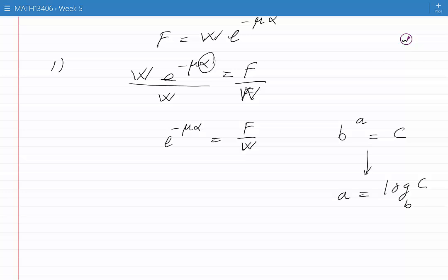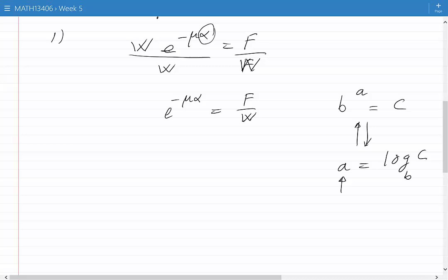In fact, this is the definition of log B base C. We say that A is log B base C if and only if B to the power of a is equal to C. You can always go from any of these equations to the other one. In this case, we can think of E as B, and of mu alpha as A, and of F over W as C.